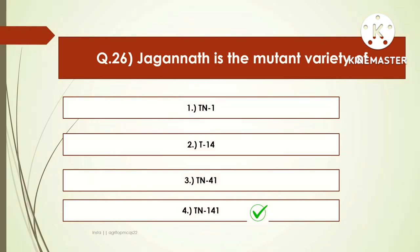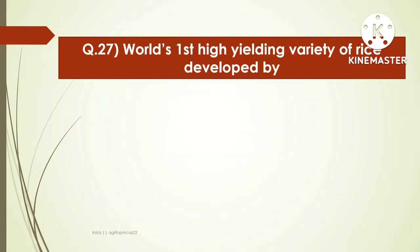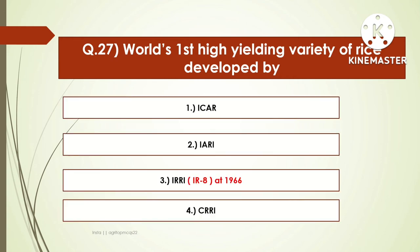The next question is: the world's first high yielding variety of rice was developed by — options are Indian Council of Agricultural Research, Indian Agricultural Research Institute, International Rice Research Institute, or Central Rice Research Institute. The right answer is International Rice Research Institute (IRRI). The first high yielding variety developed by IRRI was IR8, in 1966.